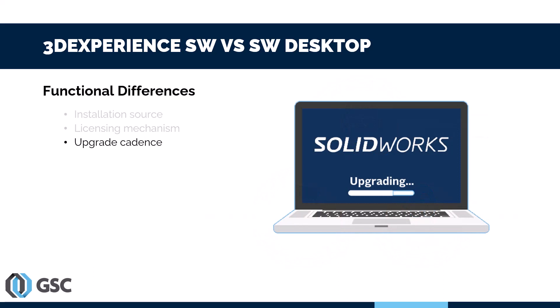The upgrade cadence is different as well. With SOLIDWORKS Desktop it's up to you to download and install updates — you can do it right away, wait a year, or some people get a couple years behind. With 3DEXPERIENCE SOLIDWORKS, updates and upgrades are automatic. They happen without you having to do anything, so you're always on the latest version of the software.